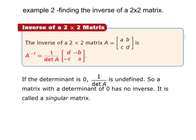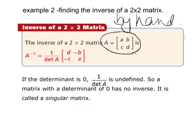Now we're going to find the inverse of a 2 by 2 matrix by hand. For matrix A, first find the determinant of A. The inverse A to the negative 1 equals 1 over the determinant of A, multiplied by a rearranged matrix where D and A trade places, and C and B become negative. This is scalar multiplication: 1 over the determinant times each entry. Note: if the determinant is 0, the inverse is undefined, and the matrix is called a singular matrix.